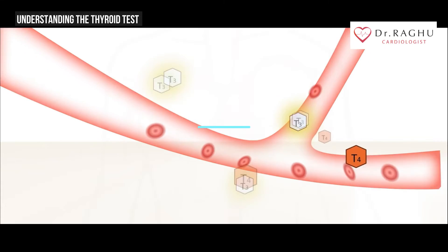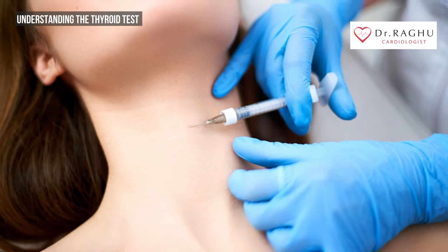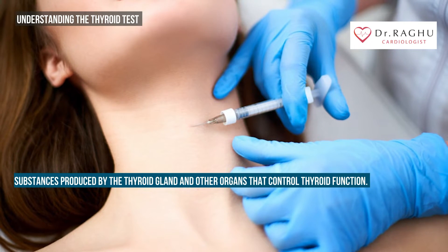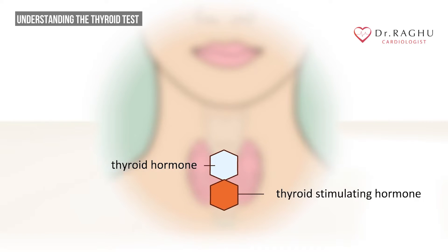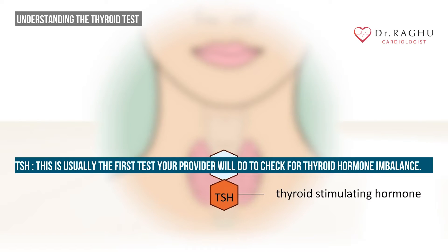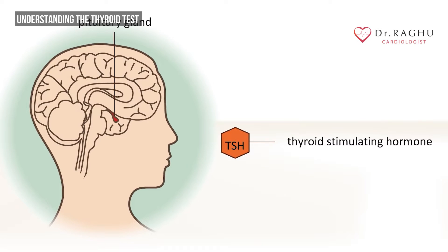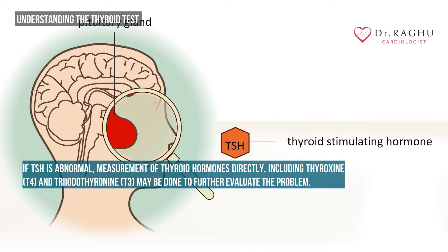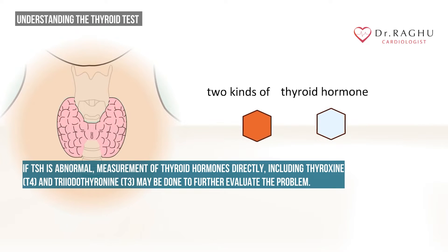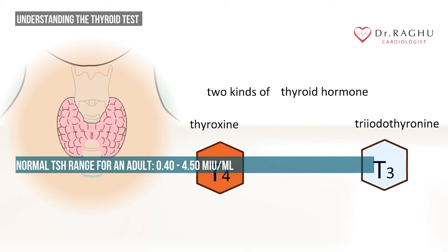The purpose of thyroid testing is to measure thyroid function by looking at the substances produced by the thyroid gland and other organs that control thyroid function. TSH is usually the first test your provider will do to check for thyroid hormone imbalance. If TSH is abnormal, measurement of thyroid hormones directly — including thyroxine (T4) and triiodothyronine (T3) — may be done to further evaluate the problem.